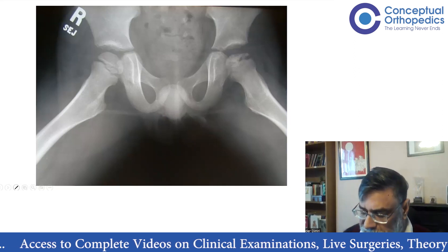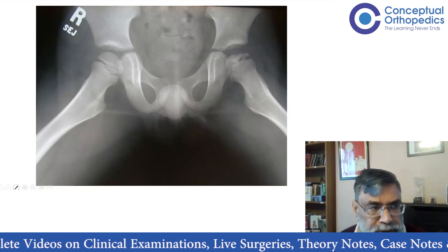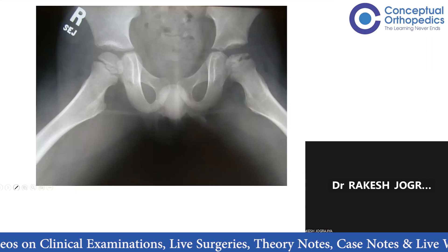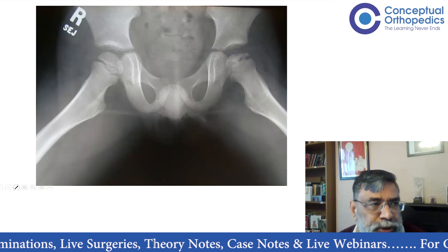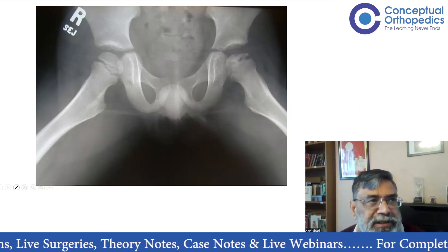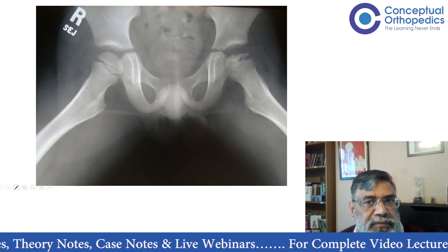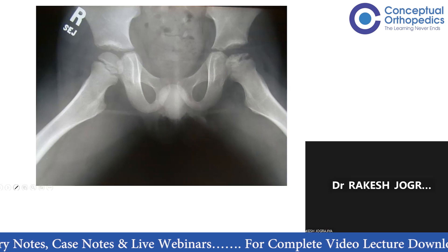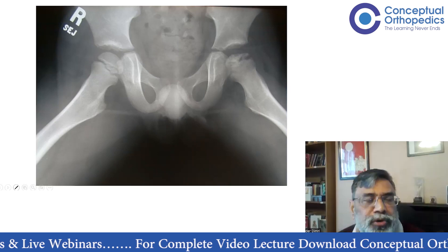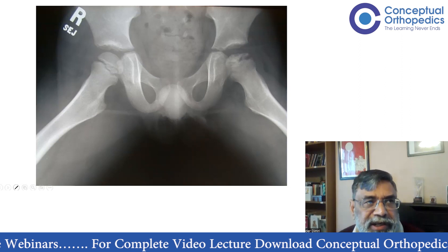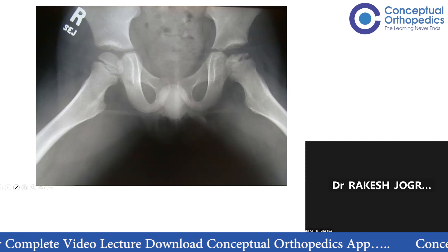So Perthes is avascular necrosis and self-limiting, occurring in the four to eight year age group. That's a good definition. But avascular necrosis following a fracture neck of femur — that would not be called Perthes. You have to add one more word: it's called idiopathic.